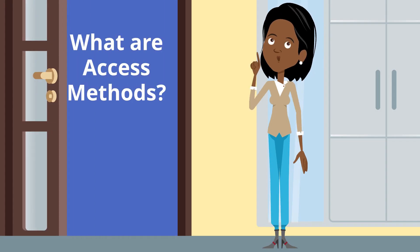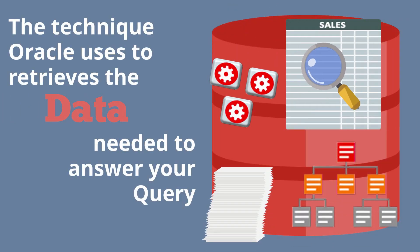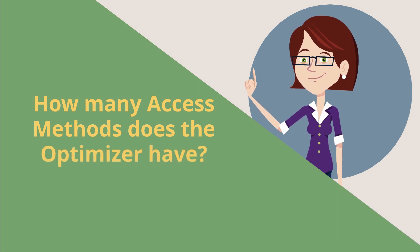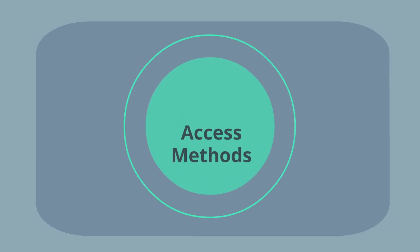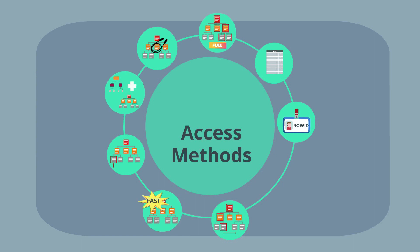So what are access methods? Access methods or access paths are the techniques Oracle uses to retrieve the data necessary to answer your particular query. It turns out there are nine possible access paths — the Oracle Optimizer only has nine access paths or methods available to it. So it's actually very easy for you to understand what each of these nine access methods are and when the optimizer is going to apply them. Let's now go through each of the nine options the optimizer has.